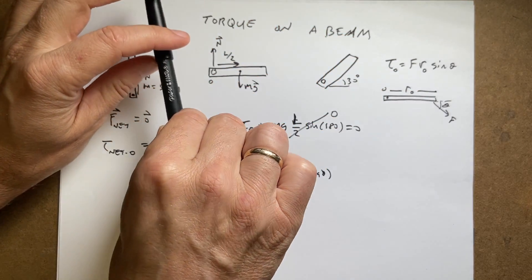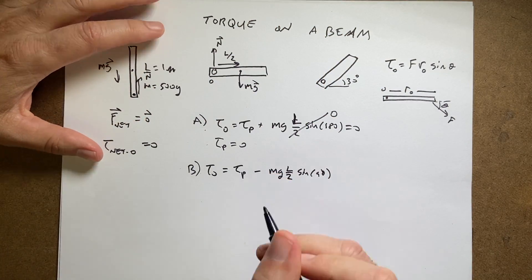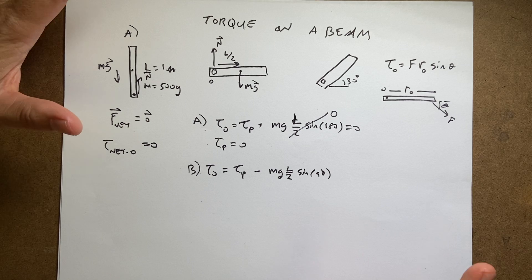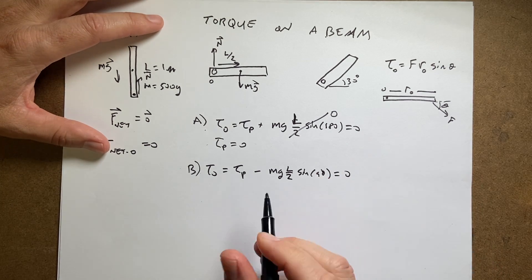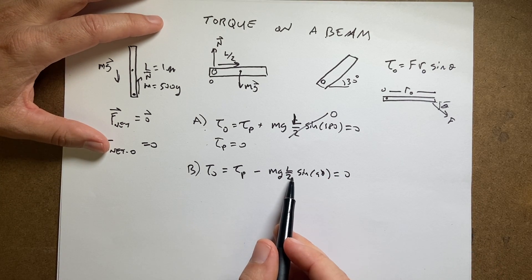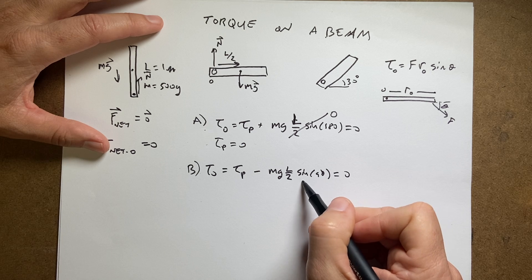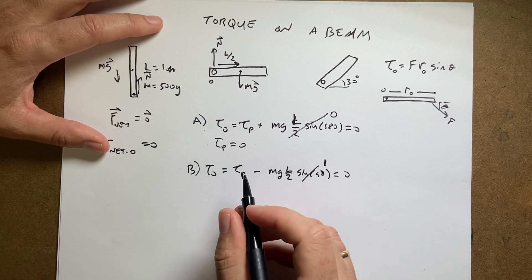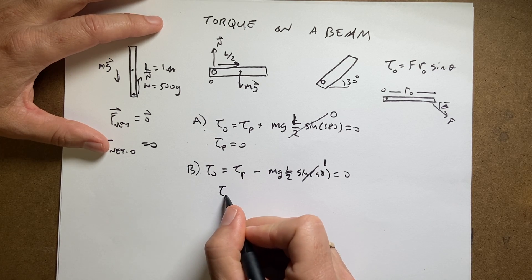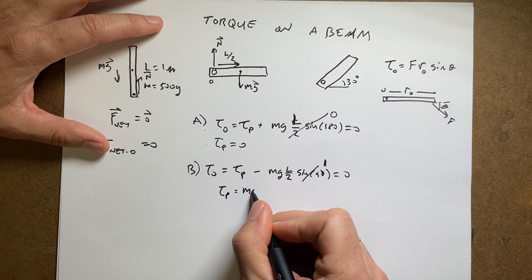That one force would make it rotate clockwise, and we call those negative torques. It doesn't really matter as long as you're consistent. You could call it the other way. So there we go. So then I have mg·(L/2)·sin(90), that's one, so then I get the torque is going to be equal to mg·(L/2).